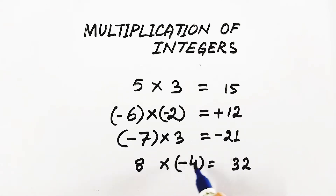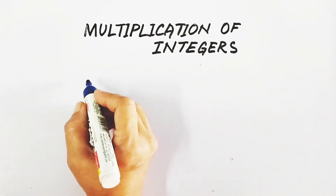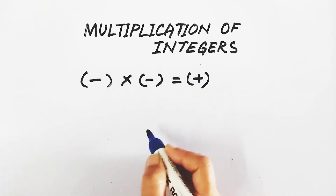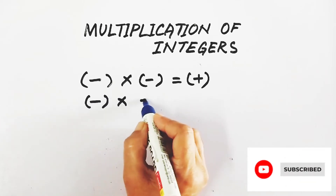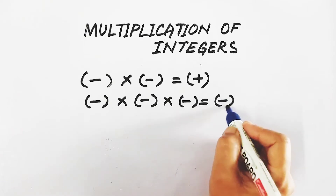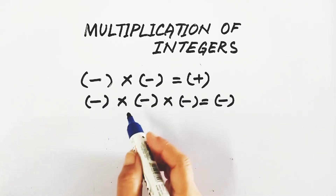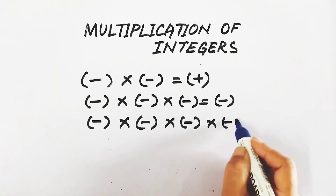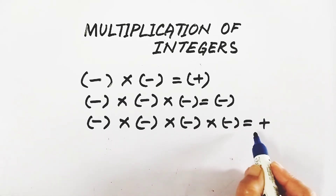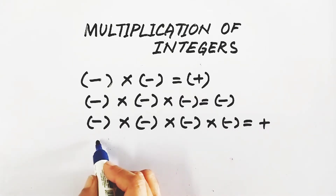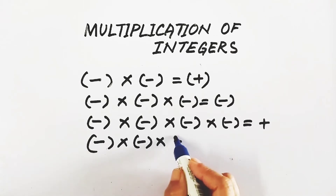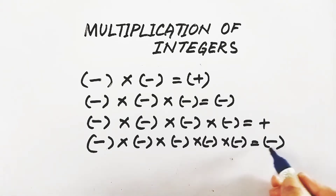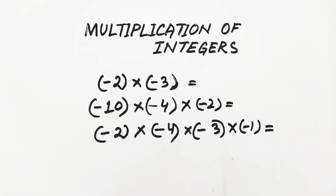But when we are finding the product of three or more integers, there is a rule. When we multiply two negative integers the product is positive, but when we find the product of an even number of negative integers the product is always positive. When more than two negatives are there — if four negative integers are multiplied, it is positive. When there is an odd number of negative numbers — like five — the sign will be negative. Find the product of the absolute values and apply the sign accordingly.